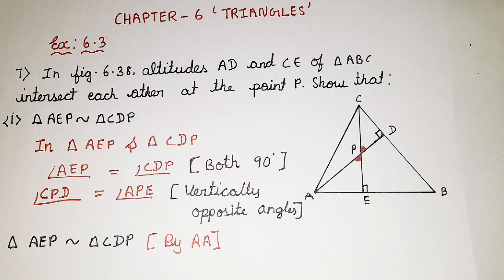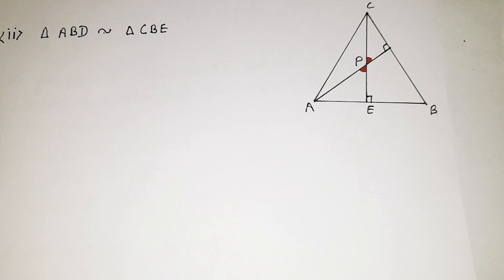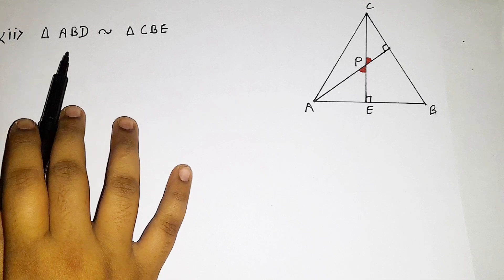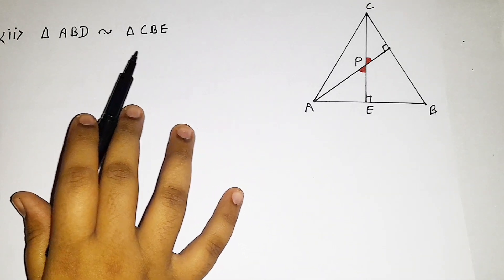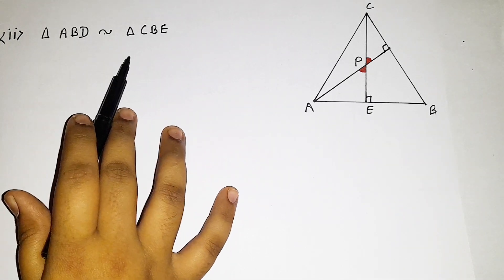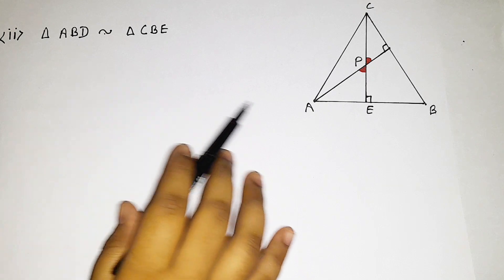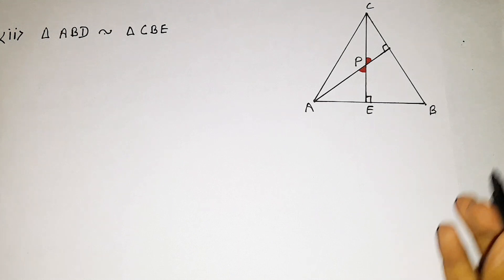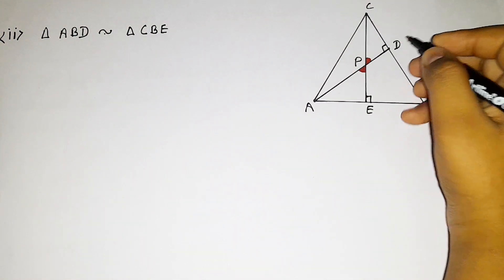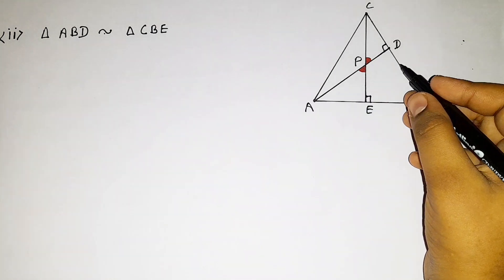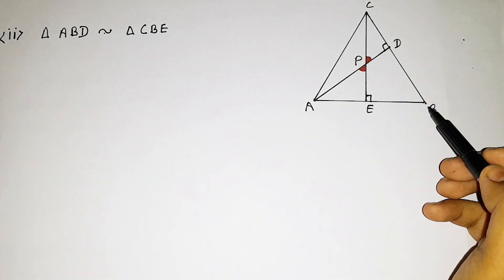Now we are going to be solving the second subdivision. The second subdivision is: show that triangle ABD is similar to triangle CBE. So we are supposed to show that triangle ABD is similar to triangle CBE. Triangle ABD — where is D? D is here.